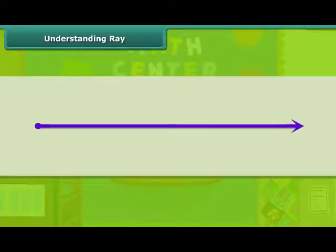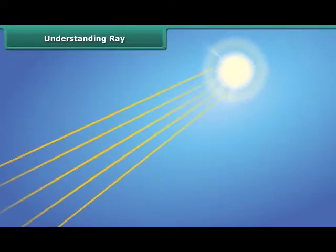We have learnt about a line segment. What if we keep one end point fixed and extend the other? Do we have any name for such figures? Yes. It is called a ray. You can consider this as sun rays.